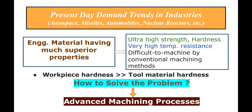When we use ultra-high-strength material as work piece material, the question arises: how do we machine them? It becomes very difficult to machine by conventional methods, where the basic principle is that the tool material hardness should be much higher than the work piece metal hardness.